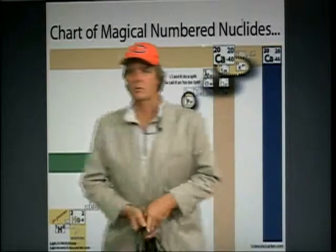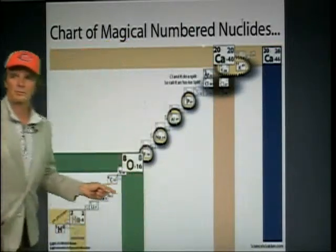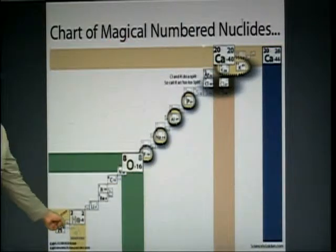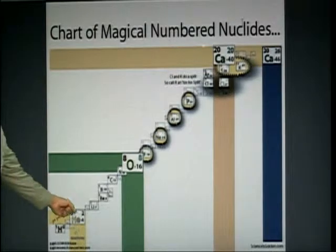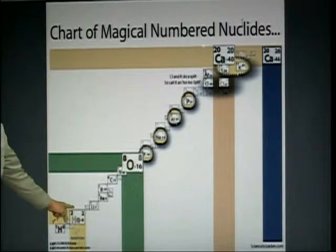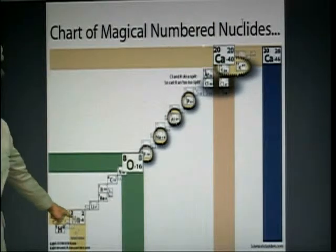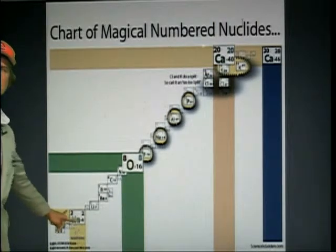Two protons to neutrons creates our alpha particle. Hydrogen fused in the sun to make a neutron. Two of those deuteriums come together, you've got an alpha particle. Double-E magic: two protons, two neutrons. Alphas.